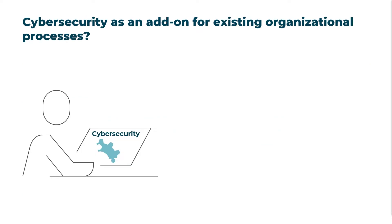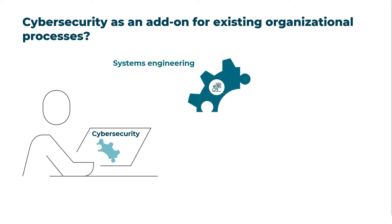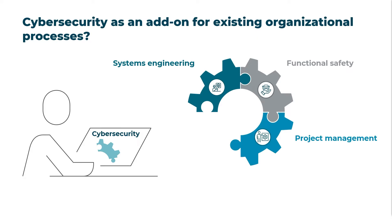Besides the newly required processes and activities, cybersecurity must be linked and considered also within the existing process landscape. Therefore, cybersecurity cannot be considered as an add-on. Principles must be taken into account when thinking about systems engineering — this includes requirements management or the systems architecture — functional safety, which includes, besides overlapping work products such as the item definition, also the functional safety aspects for the threat analysis and risk assessment. And, of course, project management, since all activities in a development project must be aligned. All other processes along the quality management system must also be considered, which includes configuration management, change management, and so on.